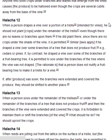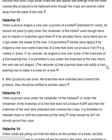Halakha 12. When a person drapes a vine over a portion of a trellis intended for vines, he should not plant crops under the remainder of the trellis, even though there are no leaves or branches upon them. If he did plant there, since there are no crops under the shade of the vine, it is permitted. Similar laws apply if he draped a vine over some branches of a tree that does not produce fruit, for example, cedars or pine. If, by contrast, he draped a vine over some of the branches of a fruit-bearing tree, it is permitted to sow under the branches of the tree where the vine was not draped. The rationale is that a person does not nullify a fruit-bearing tree to make it a trellis for a vine. If after produce was sown, the branches were extended and covered the produce, they should be shifted to another place.